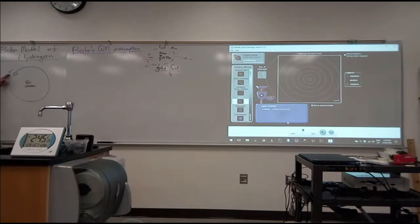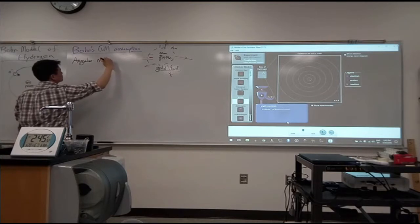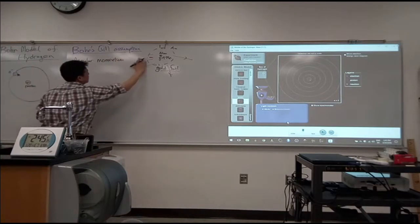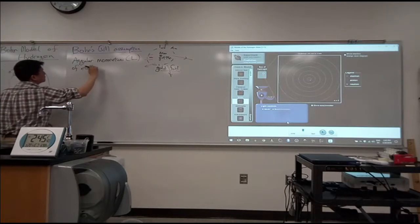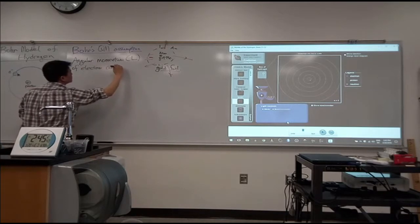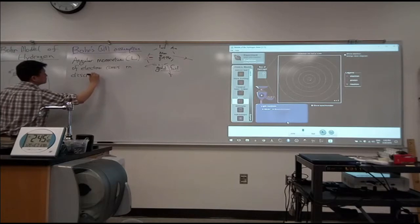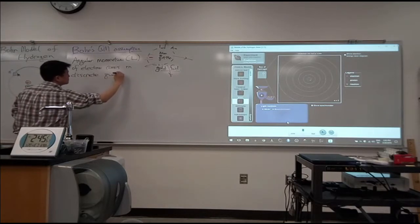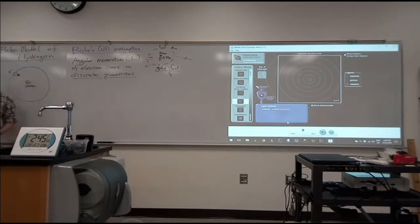So this is his assumption. He's saying, all right, this electron, it's in orbit. It has mass, so it has an angular momentum. So he said angular momentum, let me assign a letter L, of electron comes in discrete quantities.